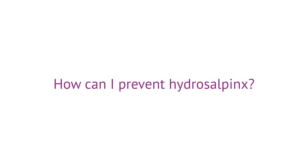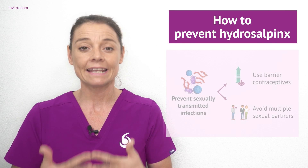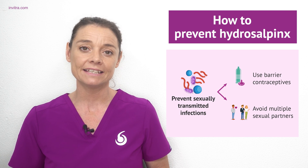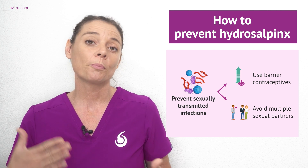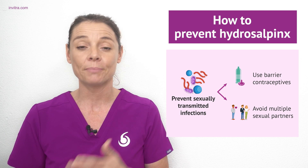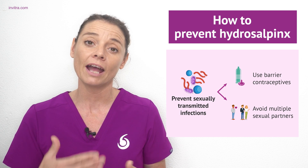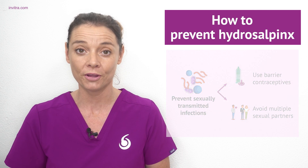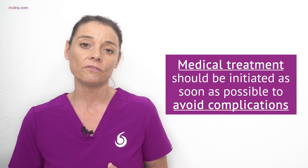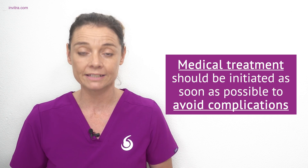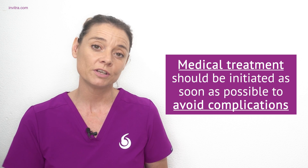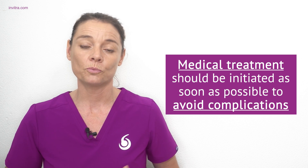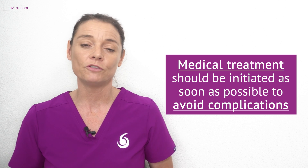How can I prevent hydrosalpinx? The best way to prevent hydrosalpinx is to prevent any sexually transmitted diseases which can result in pelvic inflammatory disease — so practicing good sexual health, using a barrier form of contraception, and not having frequent changing sexual partners. Additionally, if you are diagnosed with an infection within your reproductive tract, getting medical help and treatment quickly really helps to avoid any future complications.